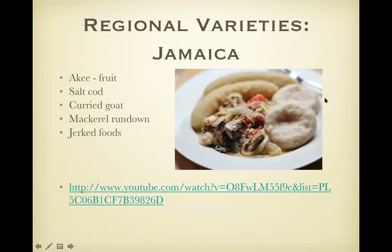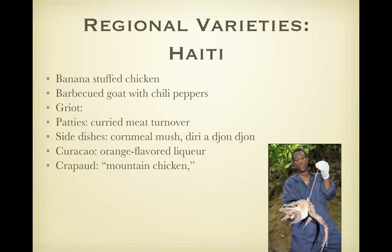Jamaica. Ackee was the fruit we talked about that lowers blood sugar. They did like salt cod, corned goat, and mackerel rundown — this is pictured and includes a thick sauce of coconut milk with usually some sort of meat. Jerked foods are very common: they usually dig a hole, put fire on top, and the meat goes inside, usually wrapped and sometimes seasoned with pimentos and mints. I may ask you about jerked foods.